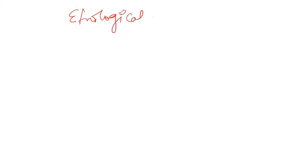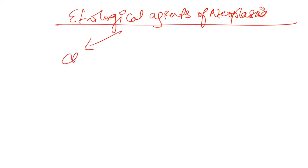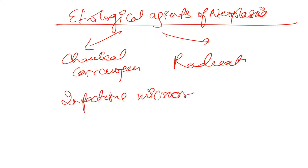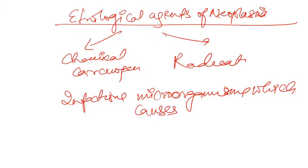Hello everyone, so we are into Part 2 of etiological agents of neoplasia. In our first part we talked about chemical carcinogens and neoplasia caused due to radiation. In this presentation we will be talking about infectious microorganisms which cause neoplasia.